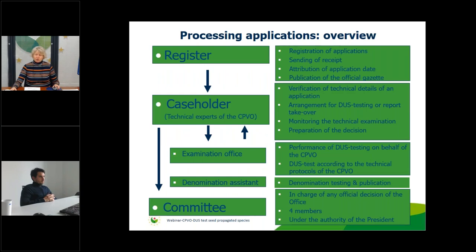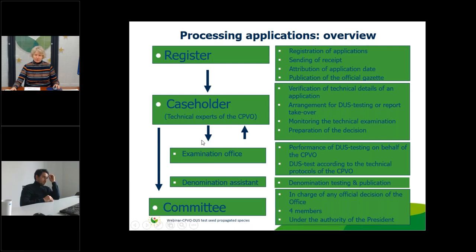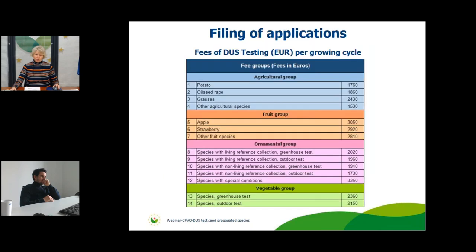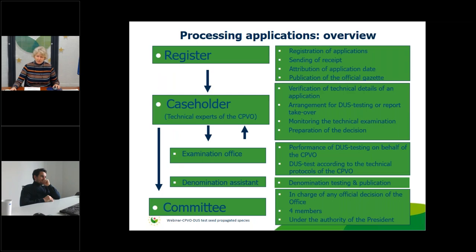Applications arrive at the CPVO registry, then go to the case holder — the CPVO technical expert — who checks all technical information. The case holder communicates with the National Examination Office. At the same time, a variety denomination proposal submitted with the application is assessed by the Denomination Assistant. The technical examination of the variety then starts, or an existing report may be taken over. The case holder prepares a decision for the committee, which takes the final decision on granting or refusing the application.